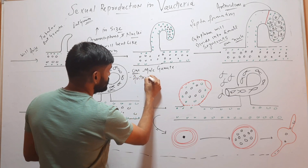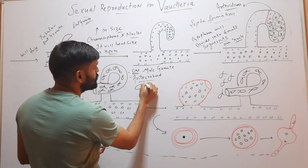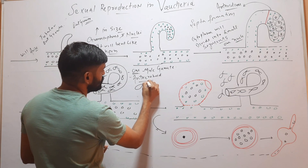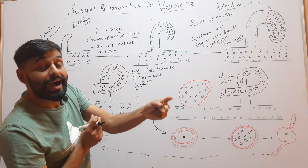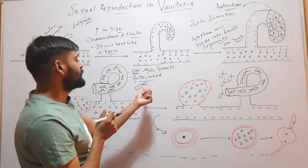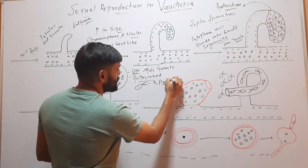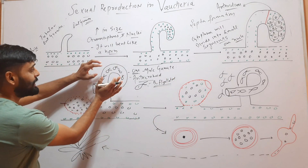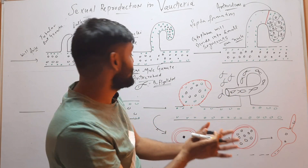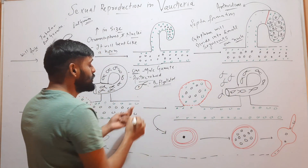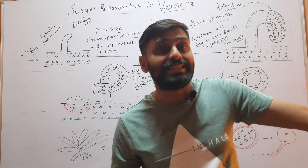Each male gamete has two unequal flagella — it is biflagellated. One flagella is of the whiplash type and another is of the tinsel type. The fully formed Antheridium contains many Antherozoids, and each Antherozoid has a single nucleus and two unequal flagella. This completes the development of the Antheridium.